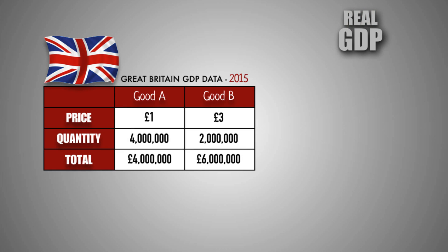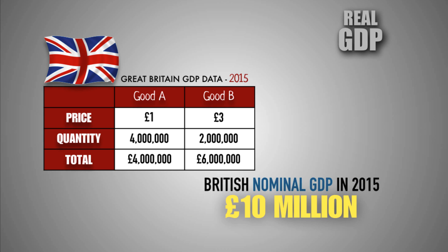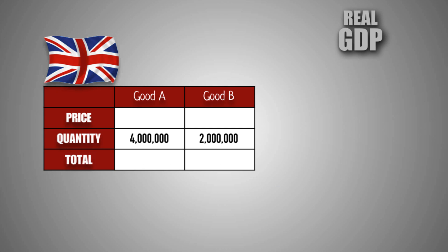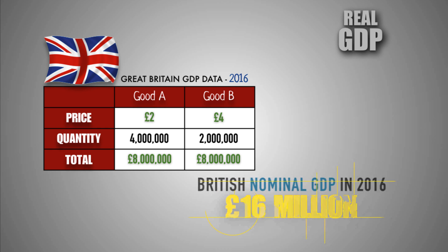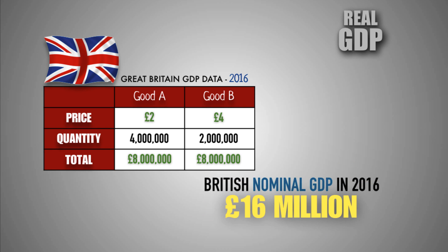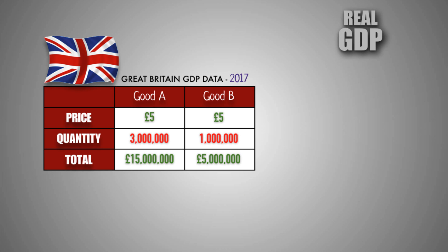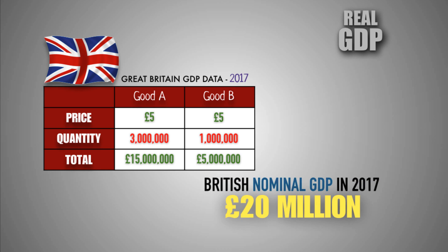When comparing GDP between two years to investigate whether an economy has experienced growth or contraction, nominal GDP can be inaccurate. Because if inflation has occurred between those two years, nominal GDP can increase due to an increase in price level, even if the economy contracted or production remained the same nationwide. In other words, nominal GDP can increase simply because goods and services are more expensive, not because the economy actually increased its output and experienced GDP growth.